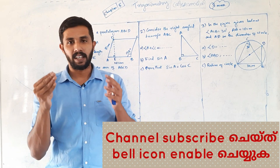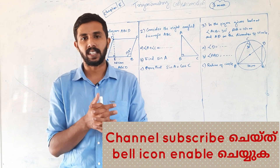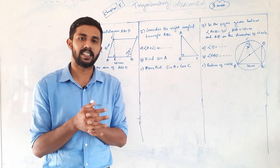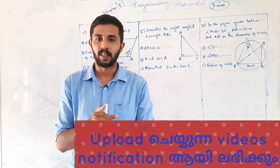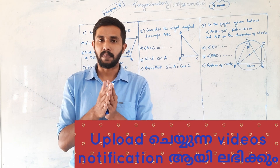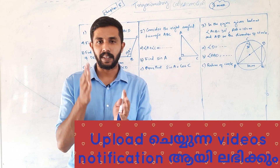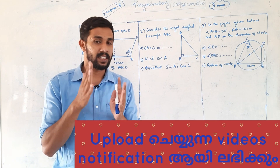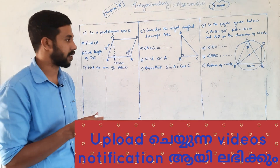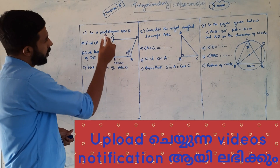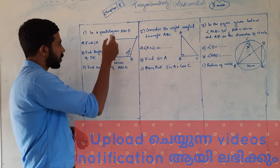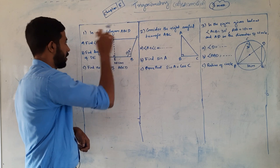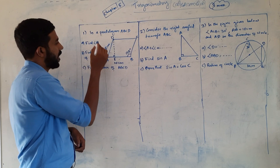There are many symbols in this picture. Let's take a look at this picture — this picture is very easy to do. There are 3 marks in this picture. Let's look at it: this is a parallelogram ABCD. Find angle A.